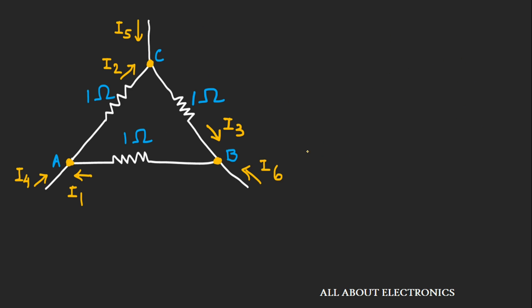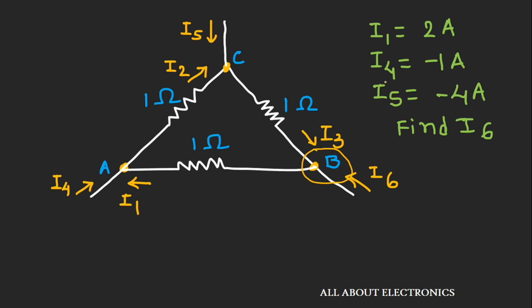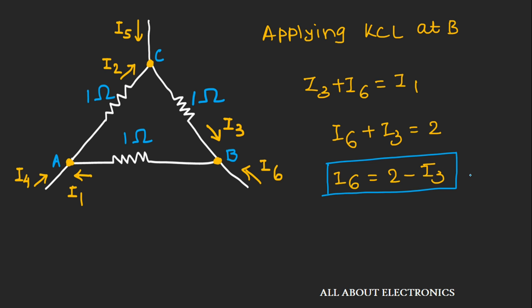Applying KCL at node B, we get: I3 + I6 = I1, since currents I3 and I6 are entering node B while current I1 is leaving node B. We are given I1 = 2 amperes, so substituting: I6 + I3 = 2, or I6 = 2 − I3. Let's call this equation 1. However, current I3 is still unknown.